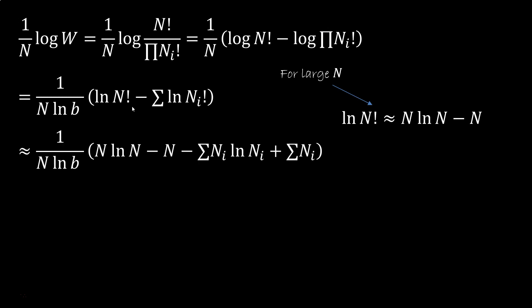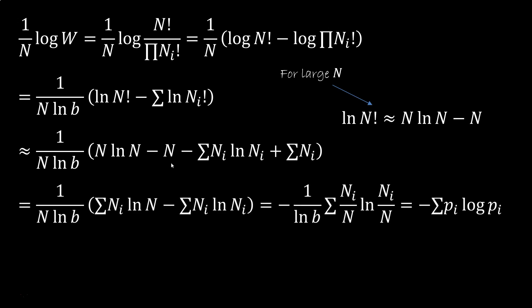Now we can apply the approximation. ln factorial becomes N ln N minus N, and minus sum of ln Ni factorial becomes minus sum Ni ln Ni plus sum of Ni. Minus N and sum of Ni simplifies, and we write this N as the sum of Ni.